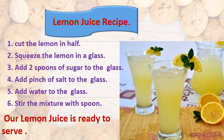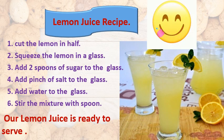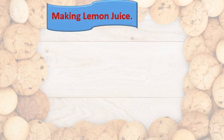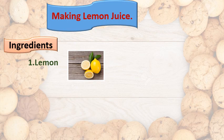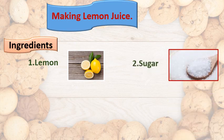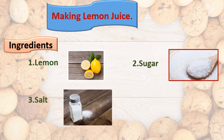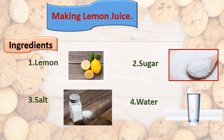This is called the recipe of the lemon juice. Now we will see the ingredients. Here are the ingredients we need to prepare lemon juice: lemons, two spoonfuls of sugar, a pinch of salt, and a glass full of water. Whatever materials you use while preparing the lemon juice, they are called ingredients. Remember the word 'ingredients.'